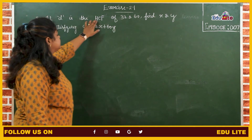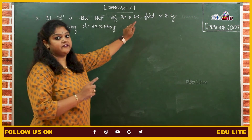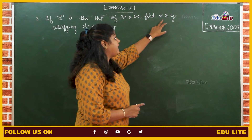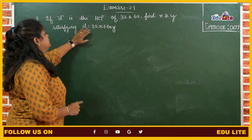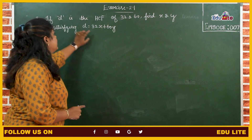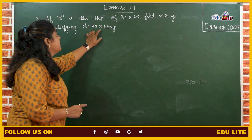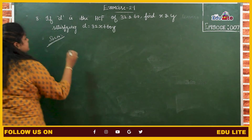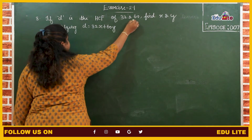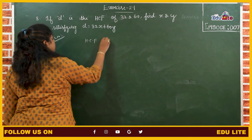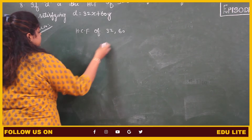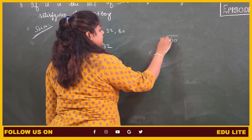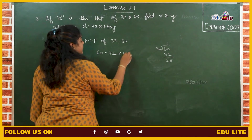The next problem: if D is the highest common factor of 32 and 60, first we have to find the HCF of 32 and 60. Next, we have to find the values of x and y satisfying D equals to 32x plus 60y. The largest number is 60, so this is the dividend and 32 is the divisor. 60 divided by 32: 1 times 32, so 32 into 1 plus 28.